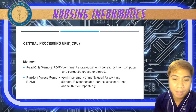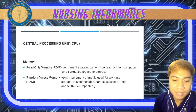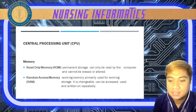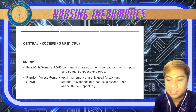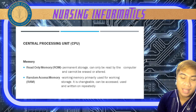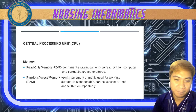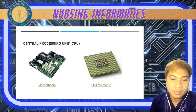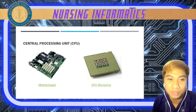RAM is temporary storage that contains data and instructions stored and processed by your applications. Its contents are deleted when the computer is turned off — so ROM and RAM are different from each other. The CPU also includes your motherboard and your CPU microchip.